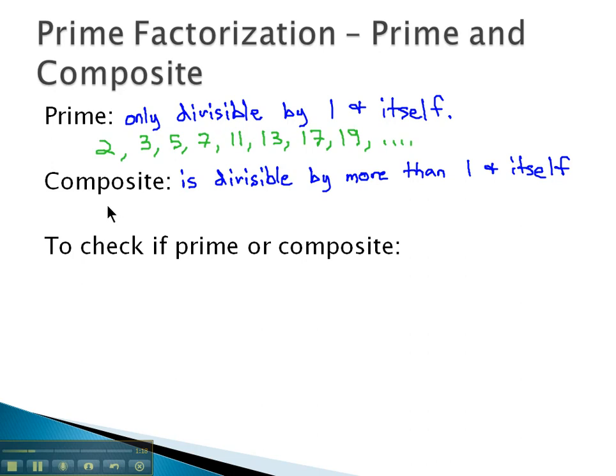An example of a composite number would be 24. 24 is composite because it's not just divisible by 1 and 24. It's also divisible by 2, by 3, by 4, by 6, by 8, by 12... lots of options. That's a composite number.